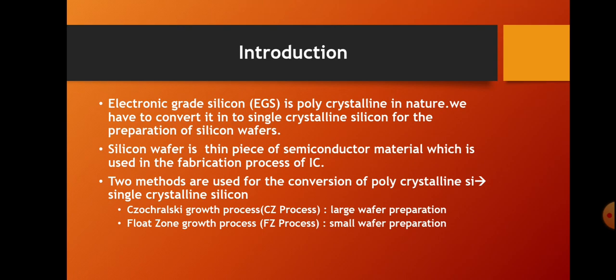There are two methods used for the conversion of polycrystalline silicon into single crystalline silicon. The first method is the Czochralski growth process, or CZ process. The second method is the Float Zone growth process, or FZ process. The CZ process is used for the production of large wafer preparation, and in the case of small wafer preparation we use the Float Zone process.